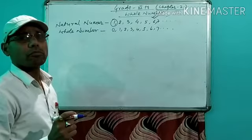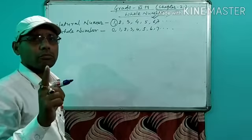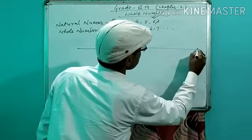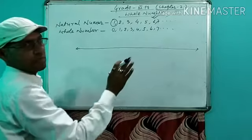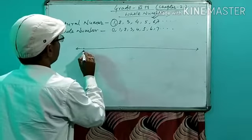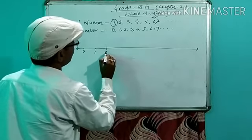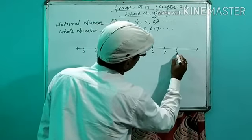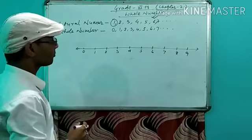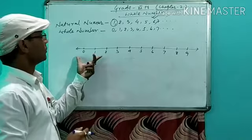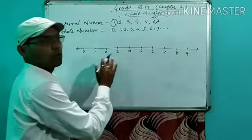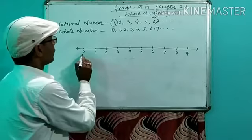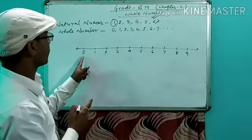Now, I am going to clear your concept on the number line. Suppose this is a straight line — give arrows in both directions. Starting from 0, 1, 2, 3, 4, 5, 6, 7, 8, 9. This is the representation of whole numbers on the number line. Here is 0. As I said, 0 is the smallest whole number.